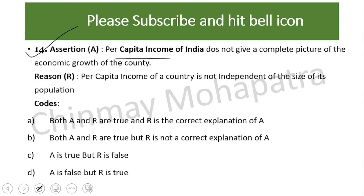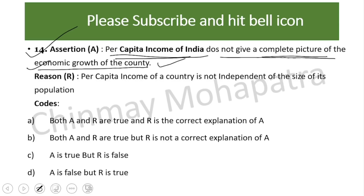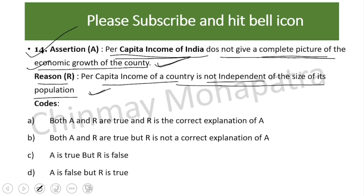Question number fourteen — assertion-reason: Assertion: per capita income of India does not give a complete picture of economic growth of the country — this is true. Reason: per capita income of a country is not independent of the size of its population — also true. But R is not the correct explanation of A, so the answer is B.